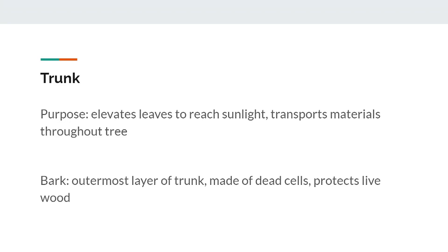The trunk is a characteristic part of any tree. It is usually the thickest woody part of the tree and runs vertically, whereas branches are typically horizontal. The purpose of the trunk is to elevate the leaves to a point where they are accessible to sunlight. It also transports water and nutrients collected in the roots and food produced in the leaves to the rest of the tree. The outermost layer of the trunk is called the bark. Bark is composed of mostly dead cells and exists to protect the living wood inside from things like disease, animals, and weather.